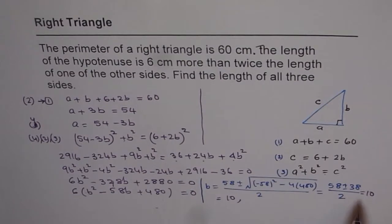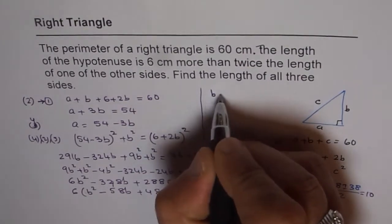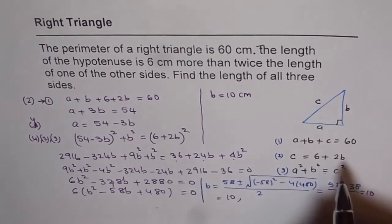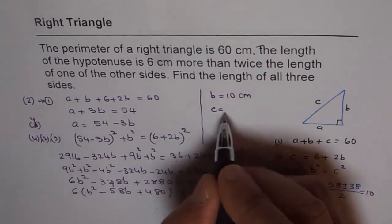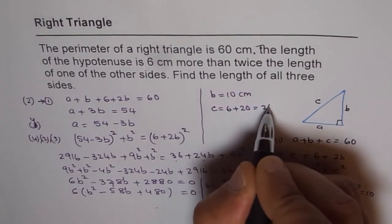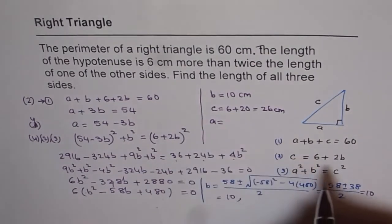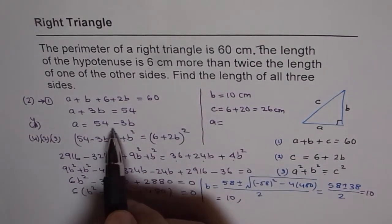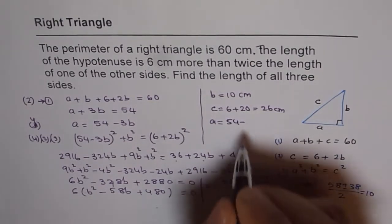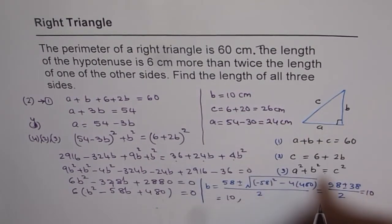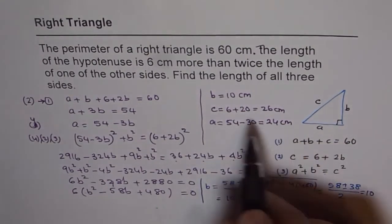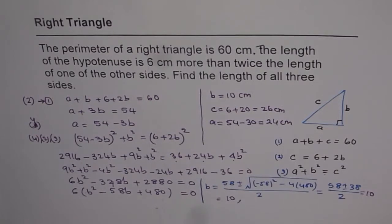That gives us b as 10. When you know what b is, you can find all the other sides. b equals 10 centimeters, c equals 6 plus 2 times b, that is 26 centimeters, and a equals 54 minus 3b, which is 24 centimeters. So these are the three sides: 24, 26 and 10.